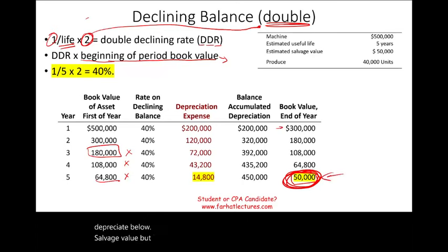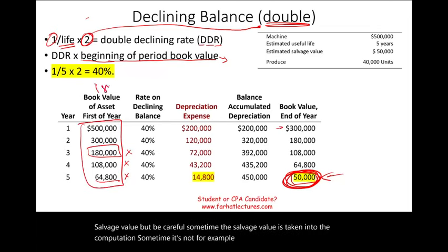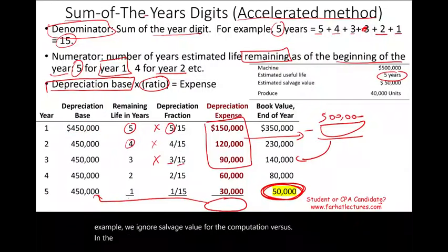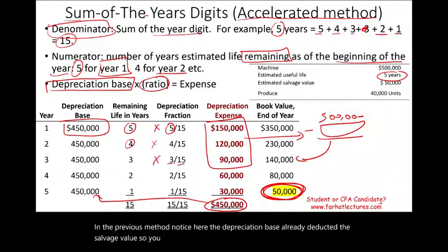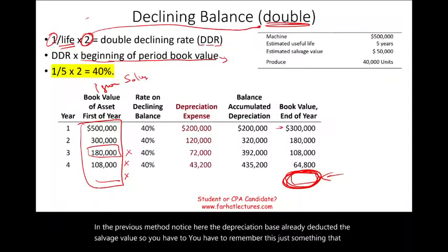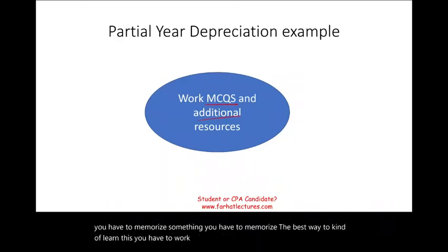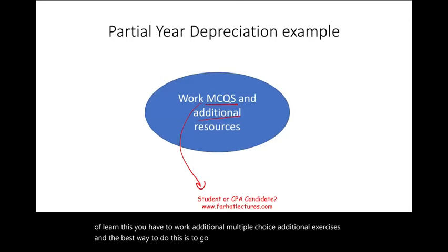All depreciation methods cannot depreciate below the salvage value. Be careful though — sometimes the salvage value is taken into the computation, and sometimes it's not. For the double declining balance method, we ignore salvage value in the rate computation; we just apply the rate to book value and stop when book value reaches salvage. In the previous methods, the depreciable base already deducted the salvage value. This is something you need to memorize, and the best way to learn it is to work additional multiple-choice questions and exercises at farhatlectures.com.